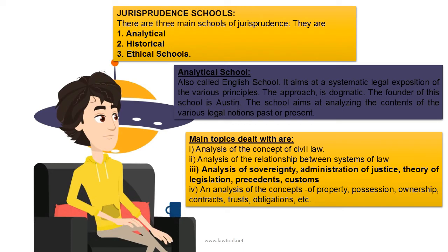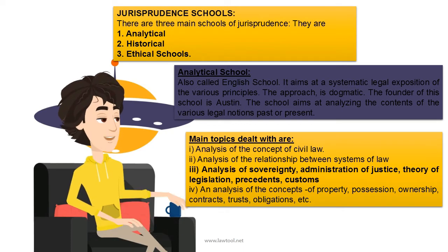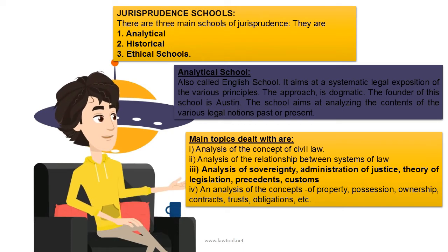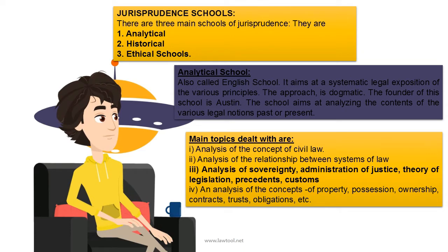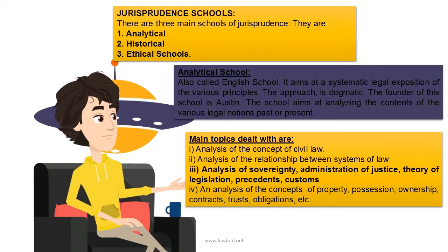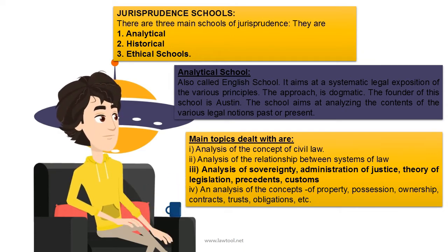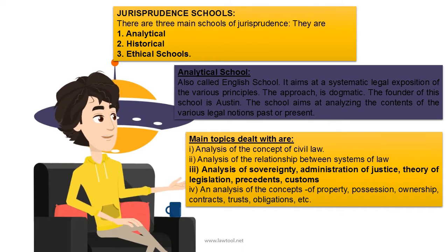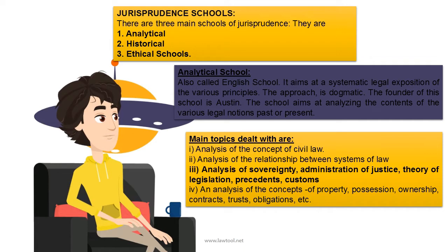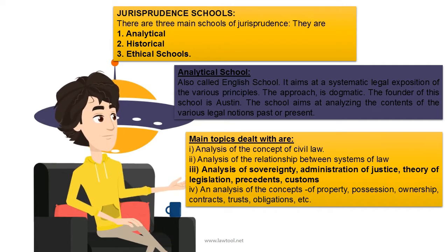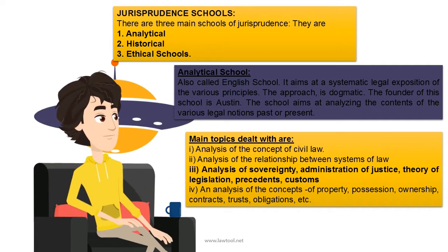The main topics of the analytical school are: one, analysis of the concept of civil law; two, analysis of the relationship between systems of law; three, analysis of sovereignty, administration of justice, theory of legislation, precedence, and customs; four, an analysis of concepts of property, possession, ownership, contracts, trusts, obligations, etc.